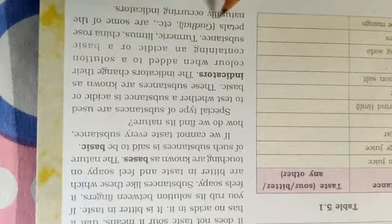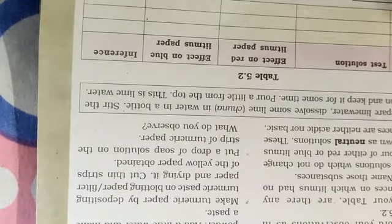Basically ye kis property pe kaam karte hain? Ye in ka color change ho jata hai jab aap isko kisi bhi acidic ya phir basic medium ke andar daalte hain. Kaun kaun se indicators use kiya jate hain? Turmeric, haldi, litmus paper, china rose ke jo petals hote hain - ye kuch naturally occurring indicators hain. Dekhenge kaise jo hai wo color change ho jata hai.